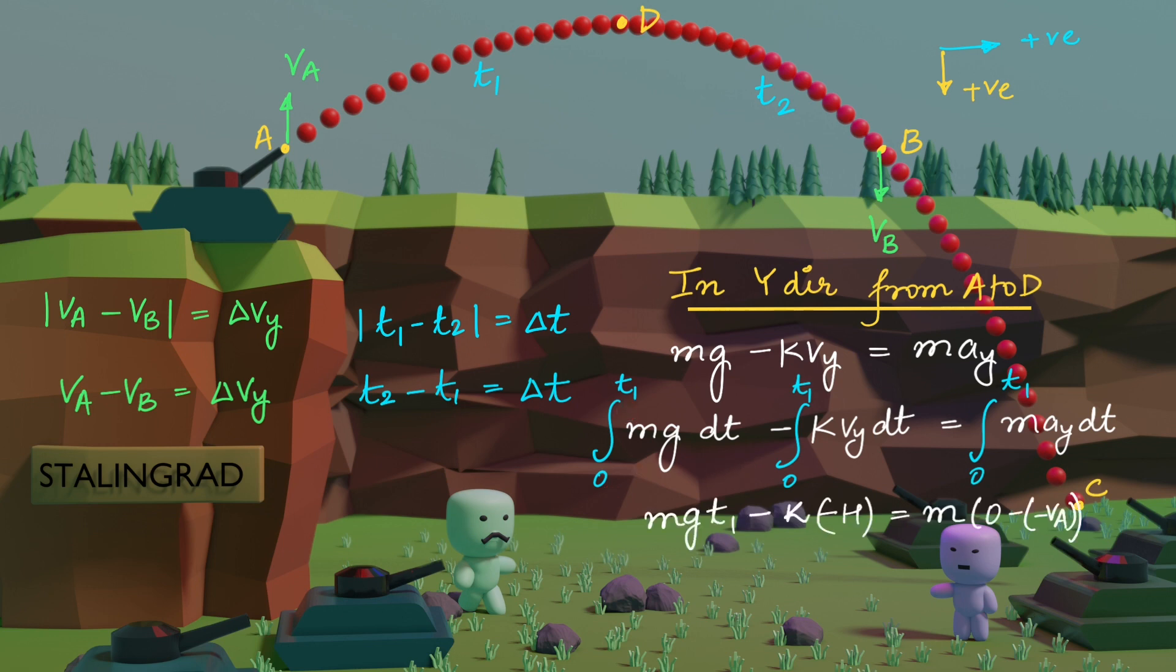So this is Mg T1. Integral Vy Dt is a displacement. So the displacement from A to D is minus H equal to integral A Dt, which is a change in velocity, where initial velocity is minus Vy and final velocity is 0. So finally we get the equation Mg T1 plus Kh equals M into Va.